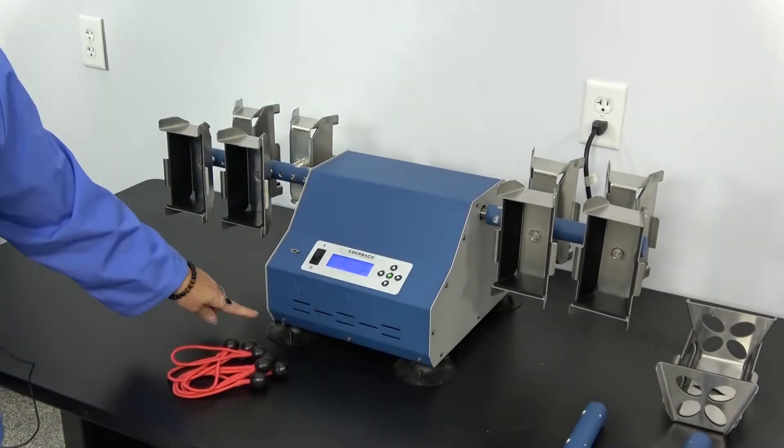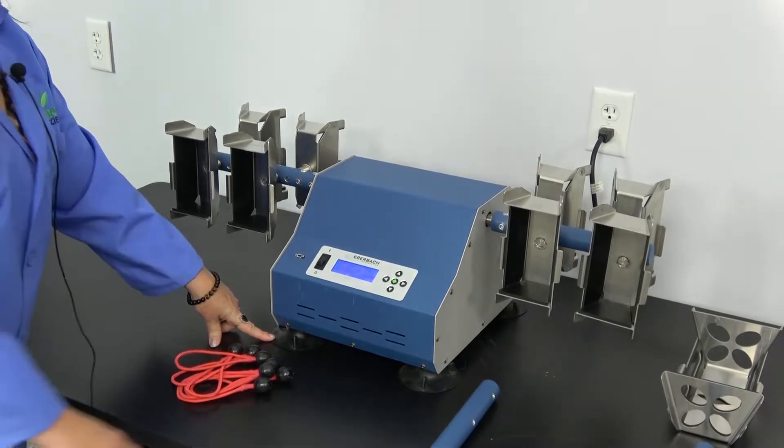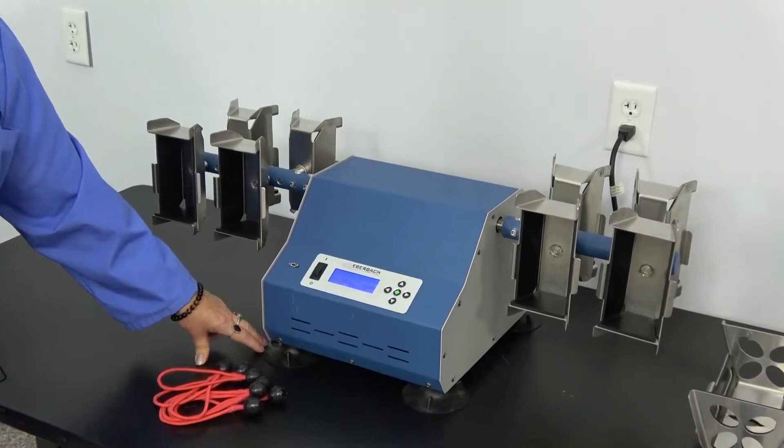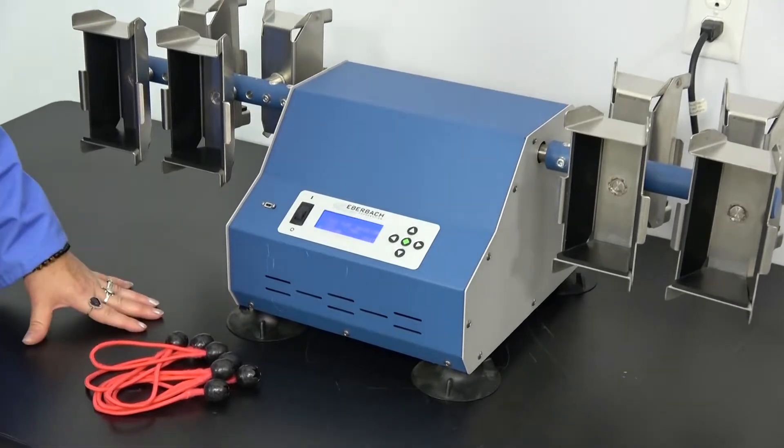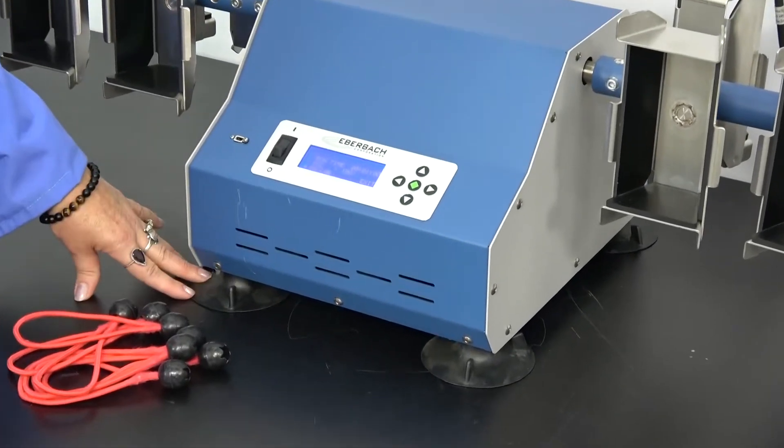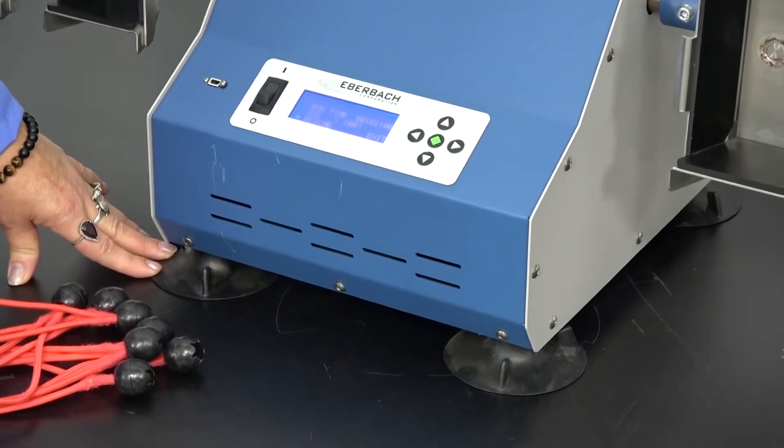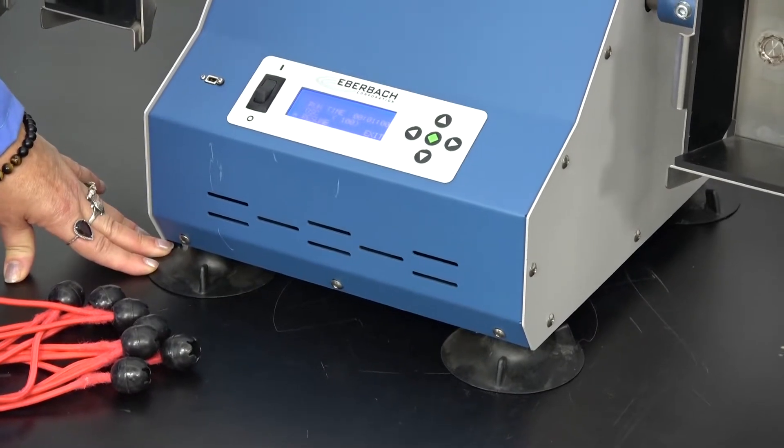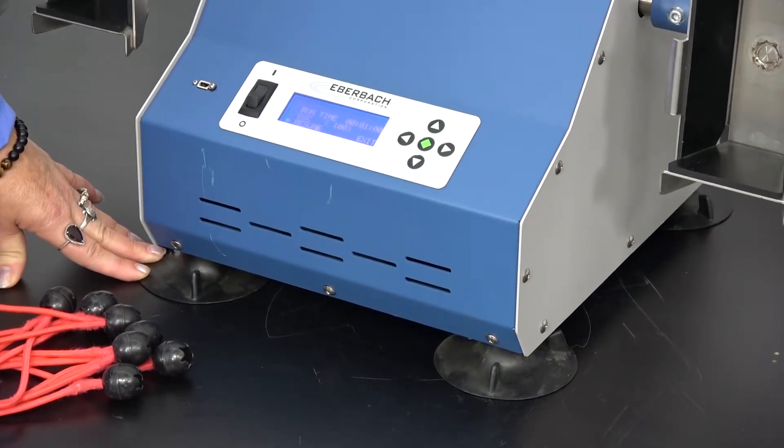The shaker features rubber feet. This makes the benchtop unit stable during the shaking procedure and it doesn't make the counter jiggle. The unit is capable of handling up to 10 pounds of load—that would be your containers plus your samples.